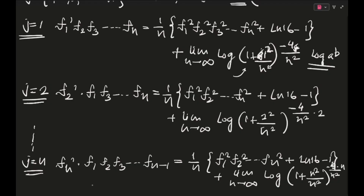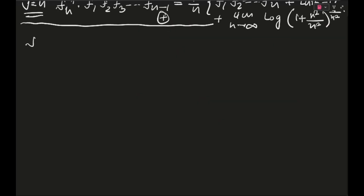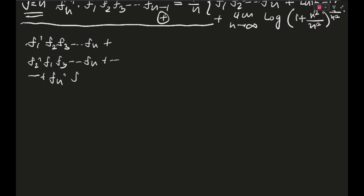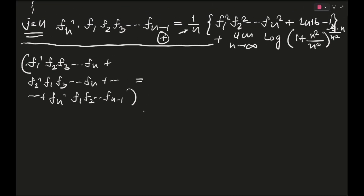After this, what we are going to do is add all these N equations from LHS to RHS completely. The left-hand side becomes F1'·F2·F3·...·FN + F2'·F1·F3·...·FN + ... + FN'·F1·F2·...·F(N−1). The right-hand side: since there was a (1/N) factor before the bracket and that bracket gets added N times, it becomes simply F1²·F2²·...·FN² + ln16 − 1.